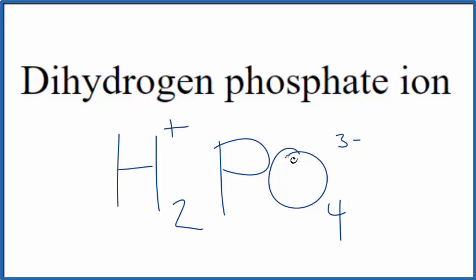So two plus and three minus, that gives us a negative one. So the charge for the entire ion, the entire dihydrogen phosphate ion, that's going to be one minus. So it's an anion that has a negative charge on it.